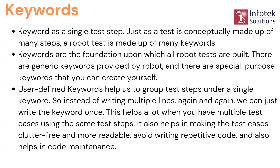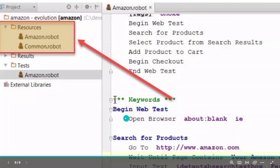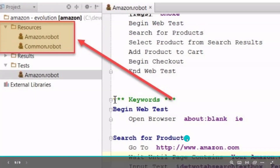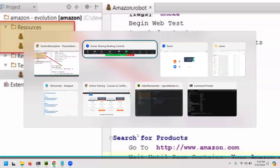When you see keywords in real time, you'll get a better idea of how they make things easier. For example, if I have 20 test cases, I write those test cases separately and make a keyword for each. Next time I want to use those test cases, I don't write them again — I just use the keyword. For instance, 'begin web test' is a keyword that opens the browser, and 'search for product' is another keyword. In the test section, you just write these keyword names and they perform all the steps inside them.